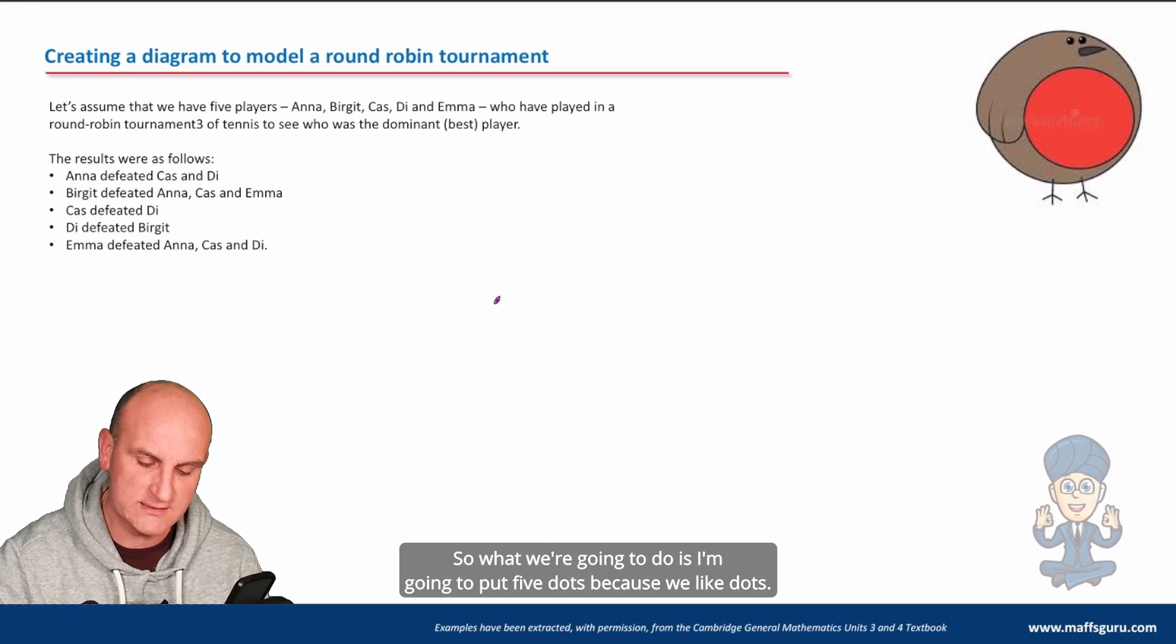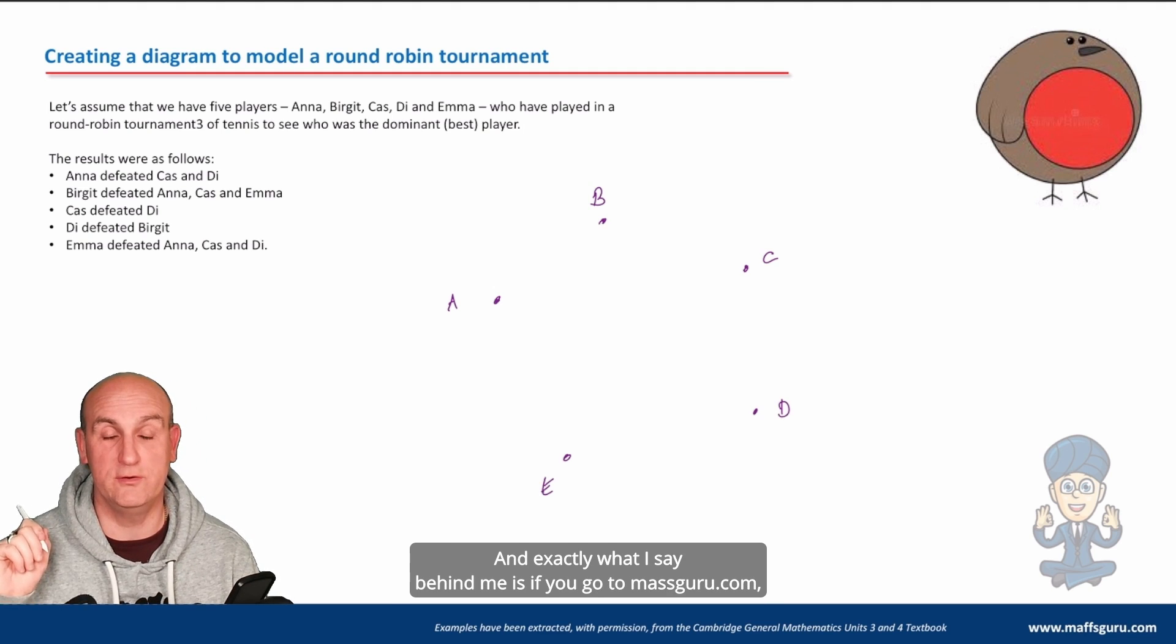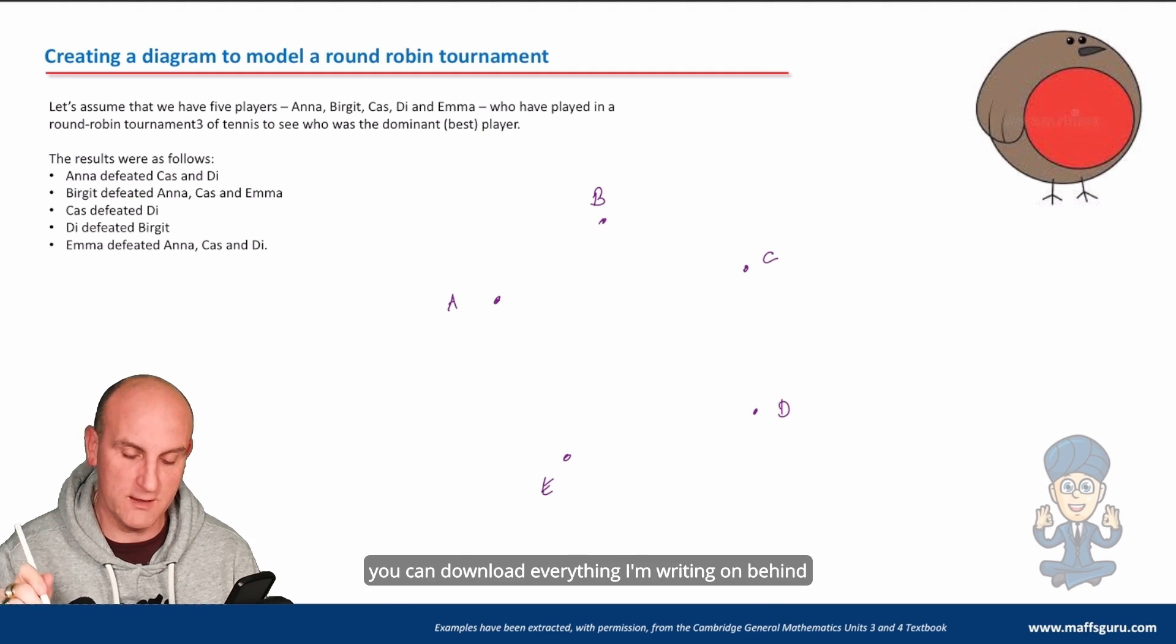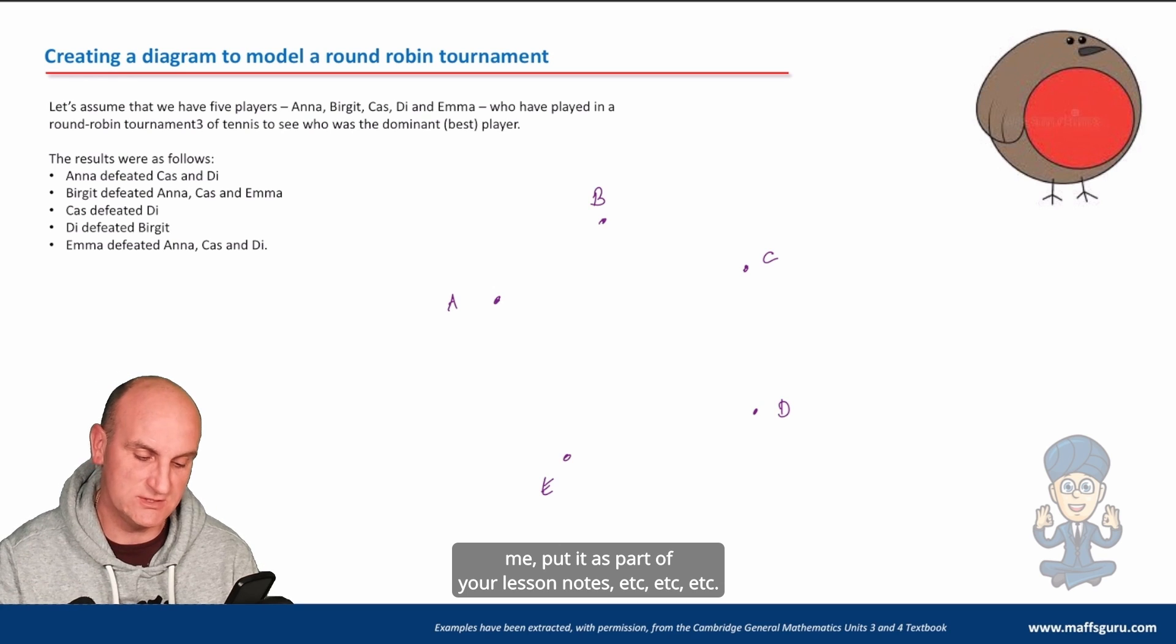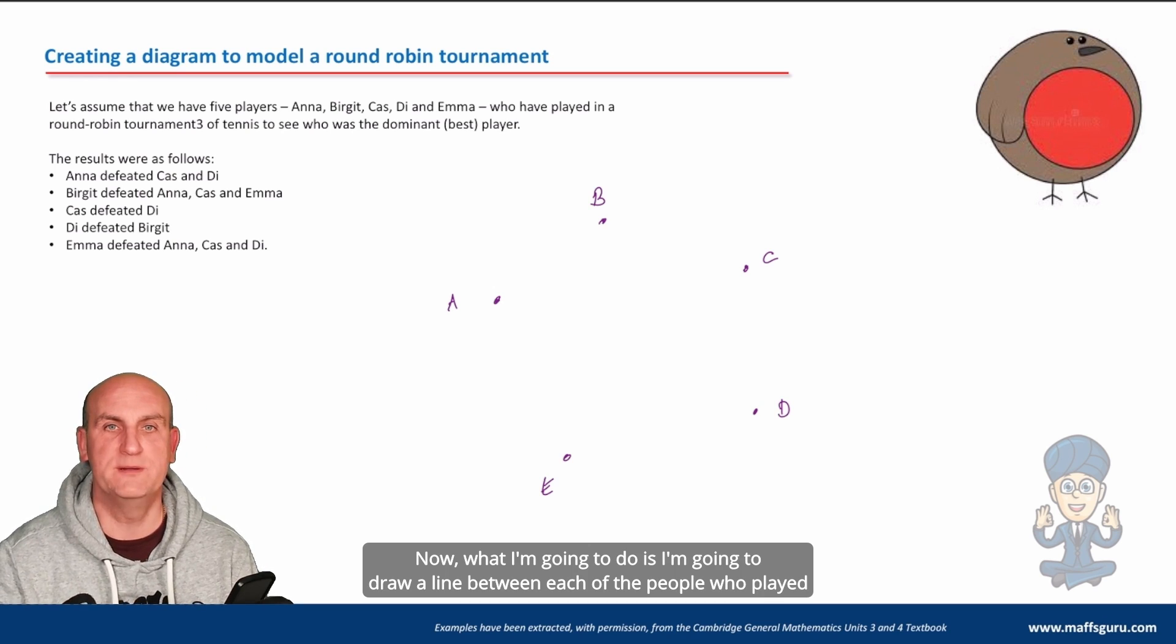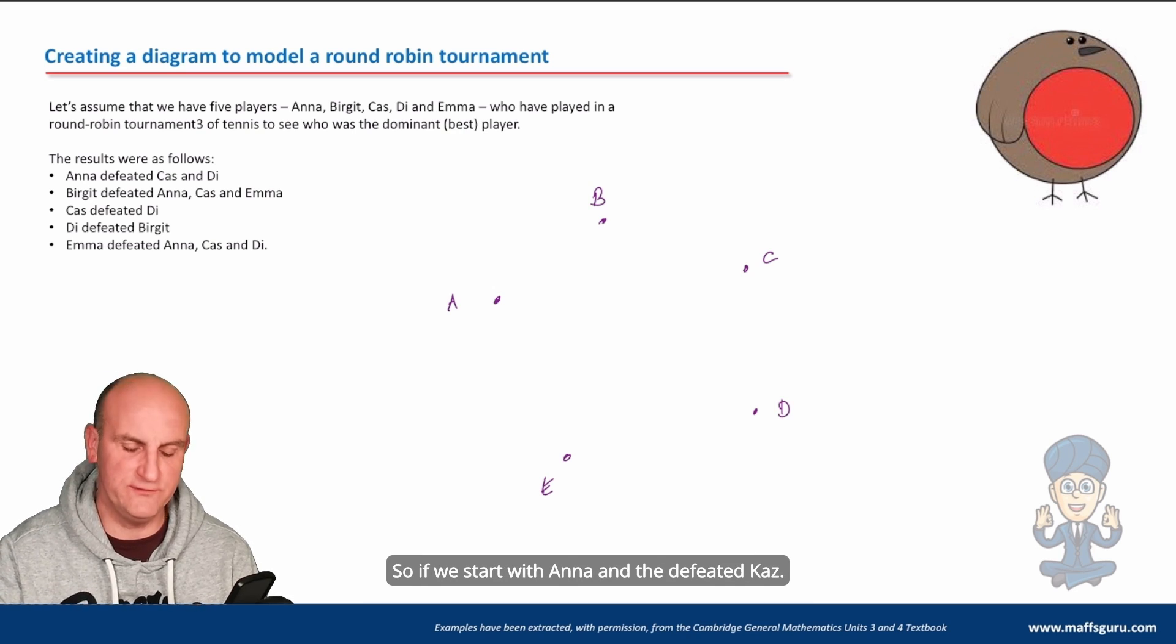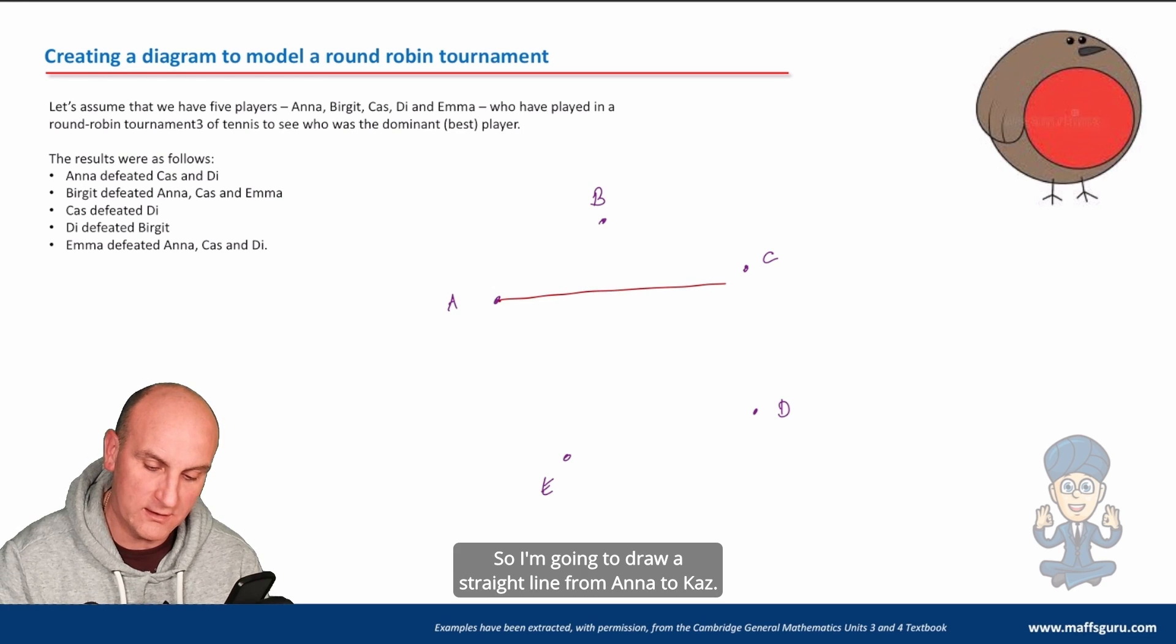So what I'm going to do is I'm going to put five dots, because we like dots - they're easy to draw. I'm not an artist, but I can draw a dot - A, B, C, D, and E. And exactly what I say behind me, if you go to MathsGuru.com, you can download everything I'm writing behind me and put it as part of your lesson notes.